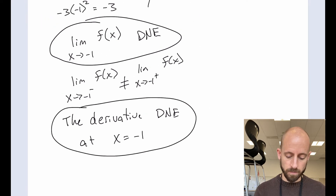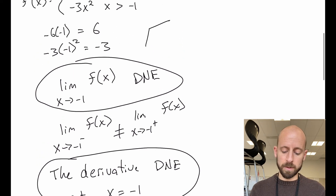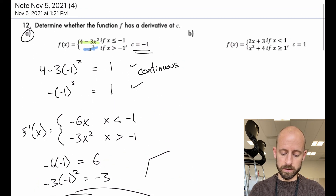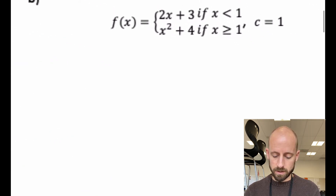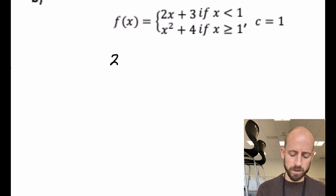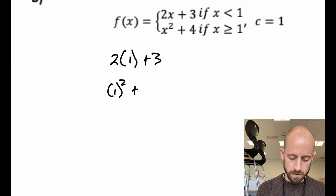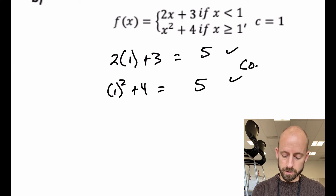Let's see a different example and go through it a bit quicker where it does work out nicely. I've got this piecewise function over here on the right, and my c value is 1. Essentially, I want to make sure it's continuous, so I'm going to plug in 1 into both pieces. Two times one is two, plus three is five. One squared is one, plus four is five. So it's continuous — that's good.